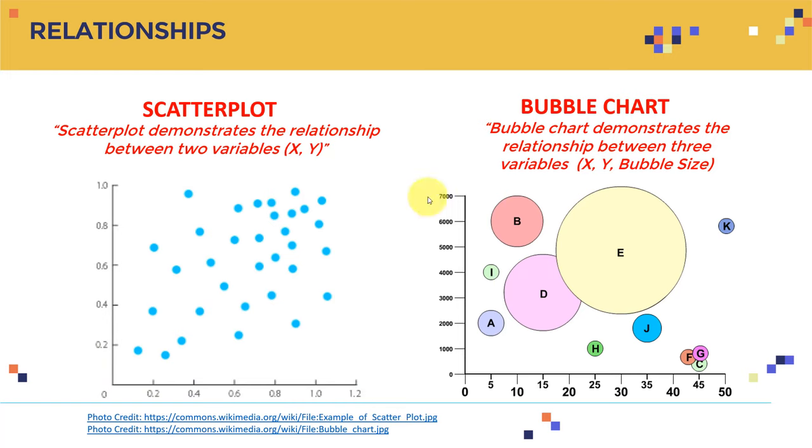Another way of demonstrating relationships is bubble chart. Bubble chart demonstrates the relationship between three variables: x, y, and bubble size. So I can plot here the x on the x-axis, let's say variable x, here I can plot y, and in addition to that, now I have the size of the bubble. So now I can plot actually three variables together in one plot using the bubble chart.